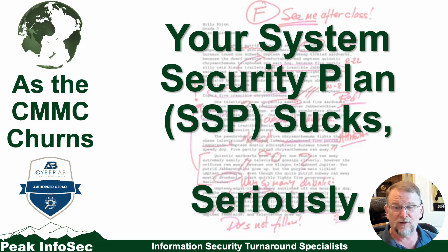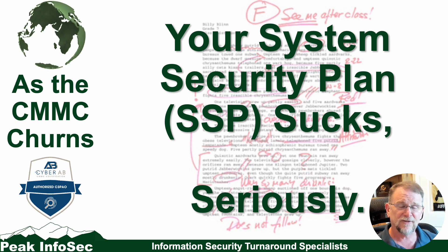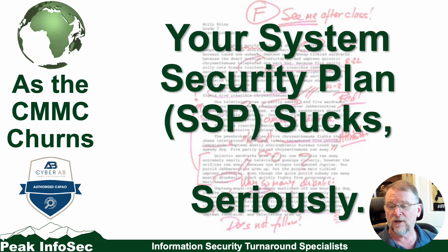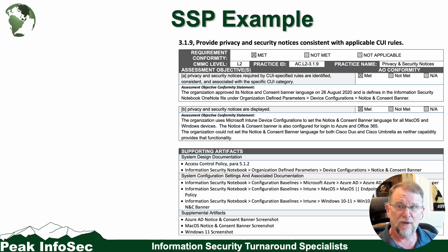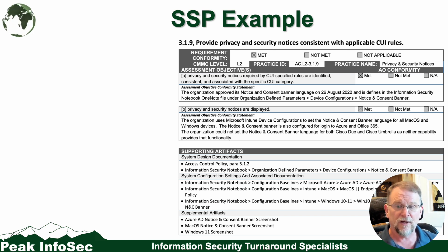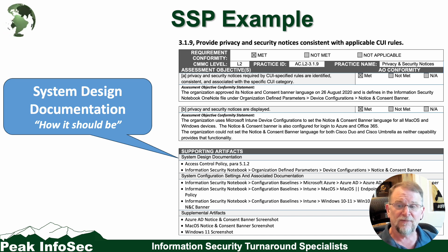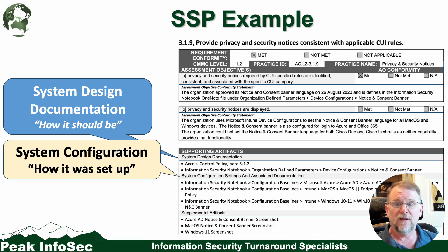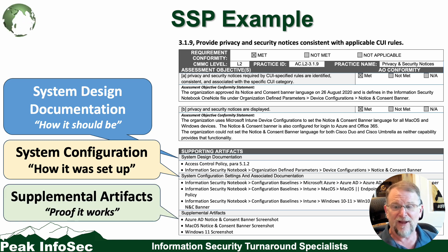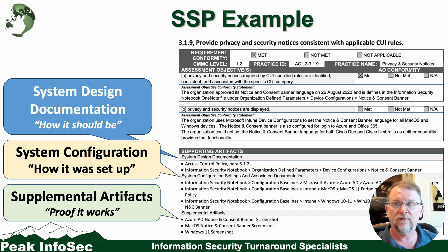Jumping back to a previous Churns — 'Your SSP Sucks, Seriously' — we're going to reemphasize this point in context of our SSP. In that Churns, we covered 3.1.9 in a lot more detail. We're re-highlighting that system design documentation, where you see 'supporting artifacts' as the first subheader — how should it be set up? The second is your system configuration — how it was set up. And the last one is your supplemental artifacts of proof that it works. This is how we document our notice and consent banner setup for 3.1.9 at Peak InfoSec — you can see how we've got everything laid out to make this really easy.